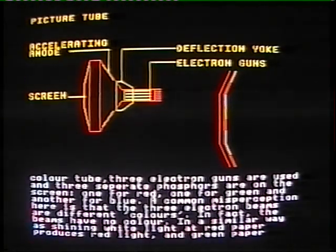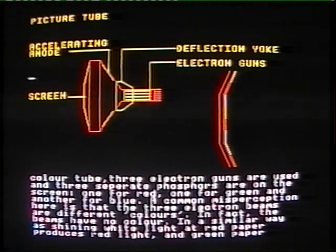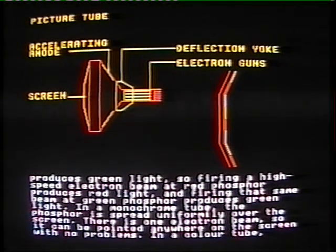In a colour tube, three electron guns are used, and three separate phosphors are on the screen — one for red, one for green, and one for blue. A common misperception is that the three electron beams are different colours. In fact, the beams have no colour. In a similar way as shining white light at red paper produces red light and green paper produces green light, firing a high-speed electron beam at red phosphor produces red light, and firing that same beam at green phosphor produces green light.